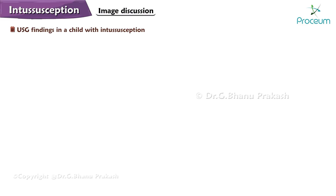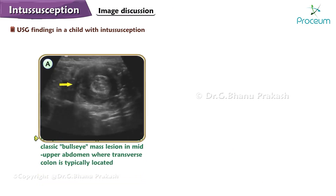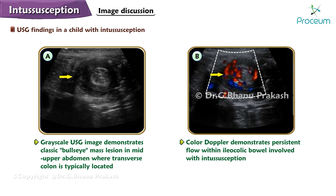Here are the ultrasound findings in a child with intussusception. Image A: A grayscale ultrasound image demonstrates a classic bullseye mass lesion (arrow) in the mid-upper abdomen where the transverse colon is typically located. Image B: Color Doppler demonstrates persistent flow within the ileocolic bowel involved with the intussusception.